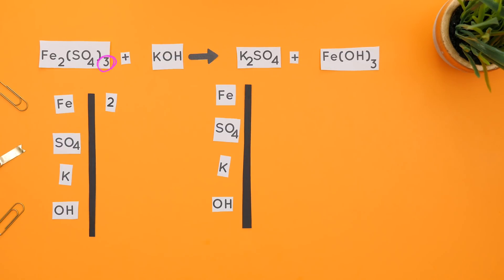So that three subscript tells us there are three SO4s. There is only one K and one OH since OH is not in parentheses. Moving to the product side, there's one iron, one SO4, two Ks, and three OHs. Let's start with balancing the irons.